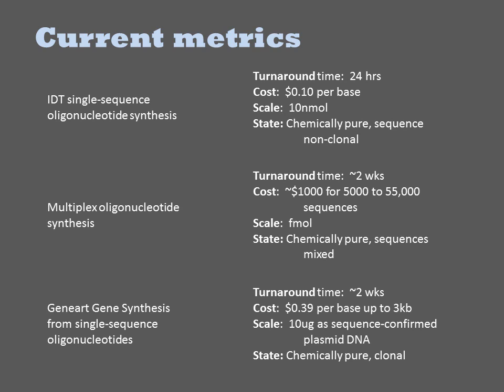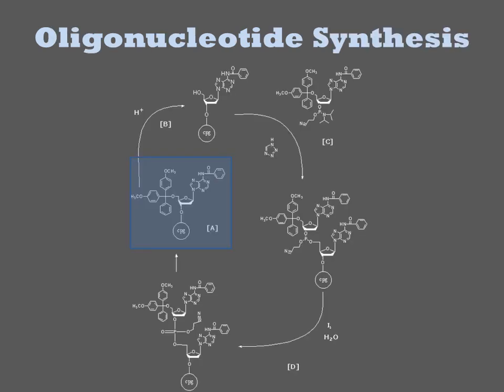Most recent offerings include Gen9 and IDT's G-blocks, which provide non-clonal products supplied as linear fragments with a faster turnaround time. Regardless of the downstream processing steps in the final format, gene synthesis begins with phosphoramidite chemistry.